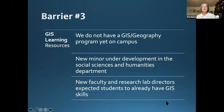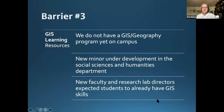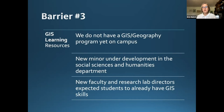Barrier number three was learning resources. We do not have a GIS or geography program. We do have a new minor either approved or under development, and data science programs under development, which is why we are joining forces with data science within the library. New faculty and lab directors expected students to have GIS skills — professors who came from UC Davis or Berkeley where GIS classes were taught would expect students to know these skills, and students would just be panicking. I worked hard to bridge those gaps.